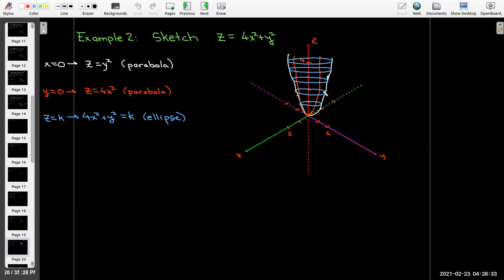And so what this turns out to be is kind of a bowl shaped object, bowl shaped surface, where if you look at it from the top, it would be an ellipse. But you look at it from the side, it would be a parabola. And so this is called an elliptic paraboloid.